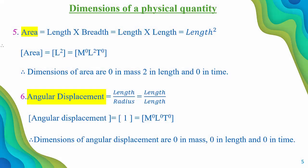The fifth example is area. Area equals length × breadth, and breadth is equivalent to length, so area equals length squared. Mass and time are absent here. The dimensions of area are M⁰L²T⁰ — 0 in mass, 2 in length, and 0 in time.